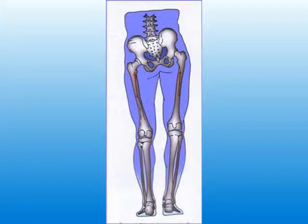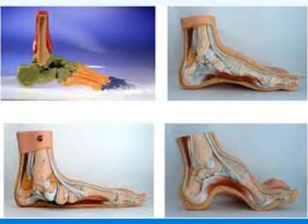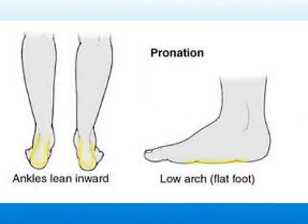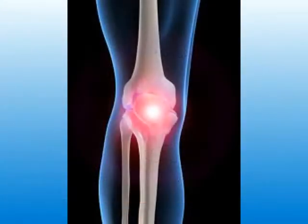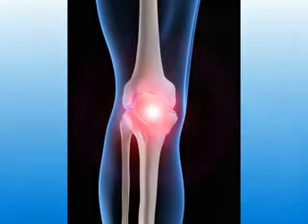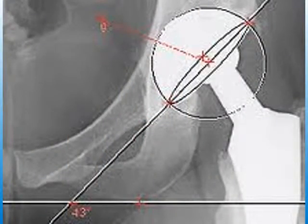First of all, a leg length discrepancy is simply an unevenness in the bone length in the lower extremities. Causes can be everything from the bones in the femur or the tibia growing unequally, or an arch in one foot or the other collapsing more than the other side, medial or lateral deviation of the knees, or degenerative changes in either one of those large joints. Even the hips can play a role in leg length inequality.